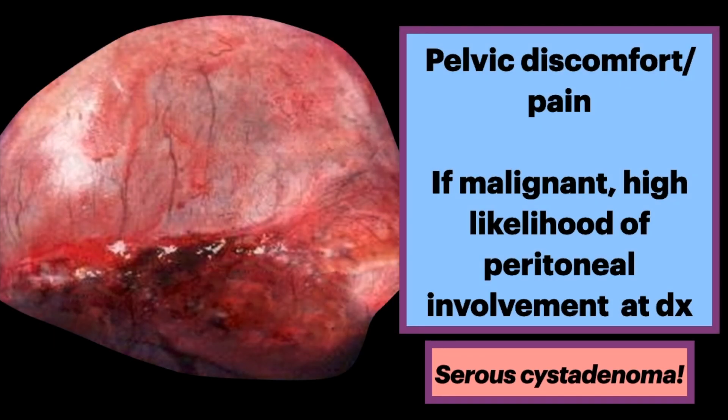In most cases, ovarian masses are removed without rupture of the cyst to prevent contamination of the peritoneum. Pelvic discomfort or pain is a common symptom. If it is a serous cyst adenocarcinoma — a malignancy — there is a high likelihood of peritoneal involvement at the time of diagnosis.